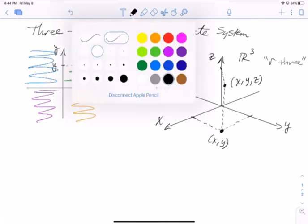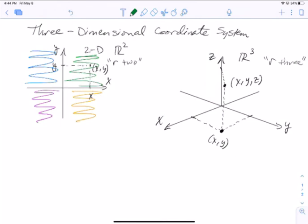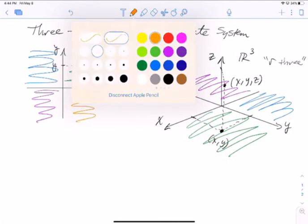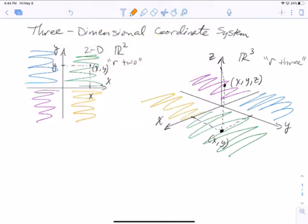Now, for a further grounding of the orientation here, we identified the first quadrant in the xy-plane using green, the second quadrant was blue, the third quadrant was purple back here, and then the fourth quadrant was orange. And so that's where everything exists here on the xy-plane in the three-dimensional coordinate system.